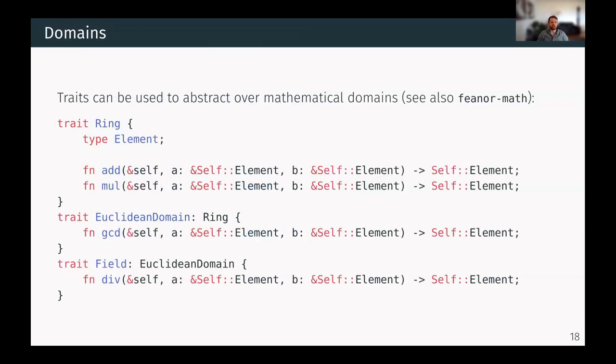So traits can be used to abstract over mathematical domains. There's also the RustGrade Feyenoord math that does something similar. For example, in mathematics, a ring is an object that has addition and multiplication.